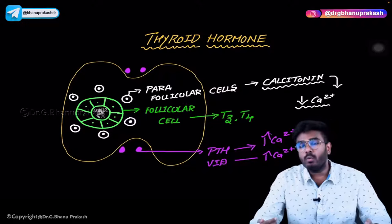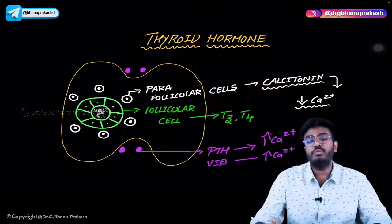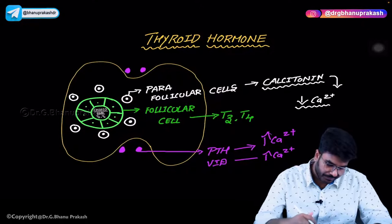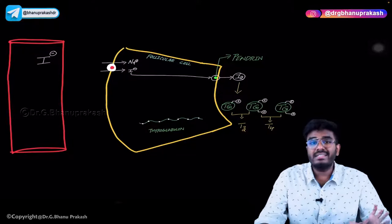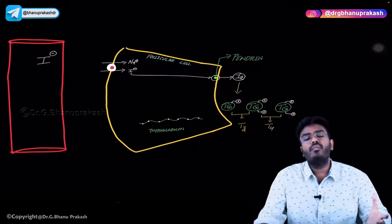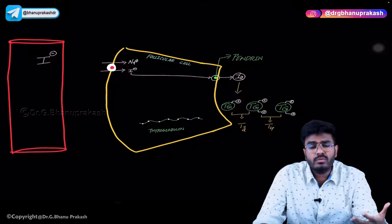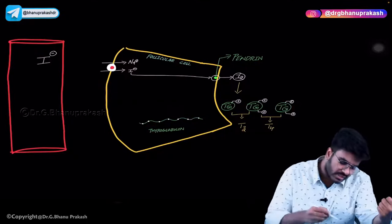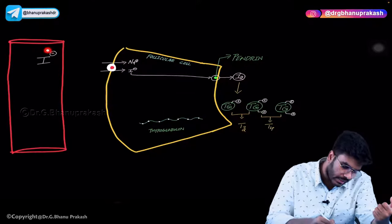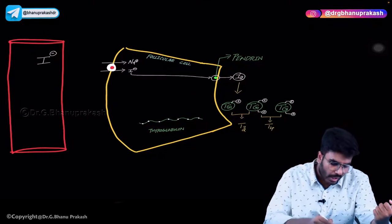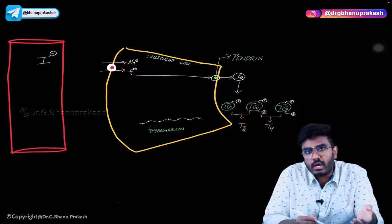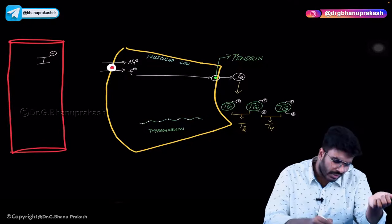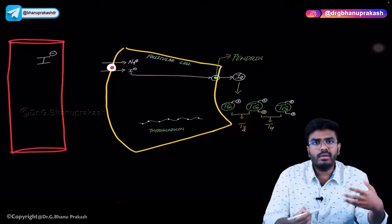Now let's see how follicular cells produce T3 and T4 — that is the synthesis of the thyroid hormone. Before discussing synthesis, what are the raw materials needed? The first important raw material is iodide. Iodides are very much important for the synthesis of T3 and T4. Iodides come from the food — iodized salt or seafoods rich in iodine.